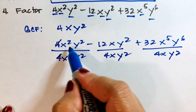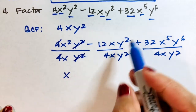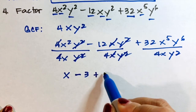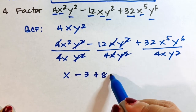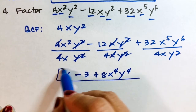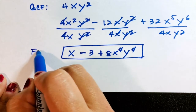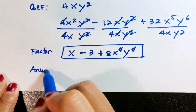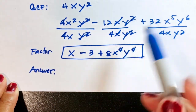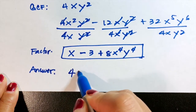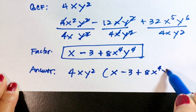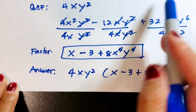Step two: divide 4x squared y squared minus 12xy squared plus 32x to the fifth y to the sixth by 4xy squared. First term: 4 divided by 4 is 1, x squared divided by x is x, y squared cancels — giving x. Second term: negative 12 divided by 4 is negative 3, x and y squared cancel — giving negative 3. Third term: 32 divided by 4 is 8, x to the fifth divided by x is x to the fourth, y to the sixth divided by y squared is y to the fourth. The other factor is x minus 3 plus 8x to the fourth y to the fourth. The factors are 4xy squared times (x minus 3 plus 8x to the fourth y to the fourth).